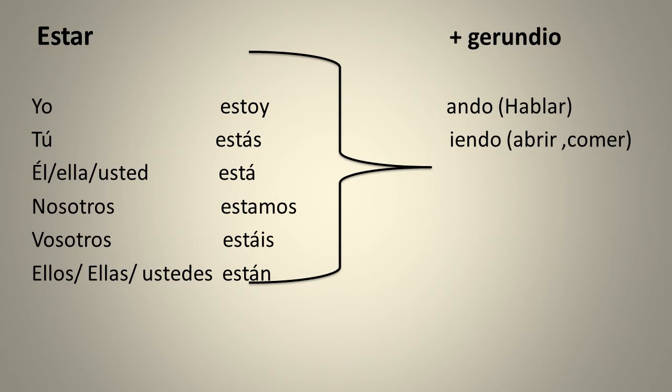It is very easy to learn. You need a verb estar and a gerund. As you all know, there are three types of verbs in Spanish: AR, ER, and IR ending. For the gerund form of an AR ending verb, you just have to remove the ending AR and add ANDO to it. And for ER and IR ending verbs, you will add ANDO by removing ER and IR from the end.